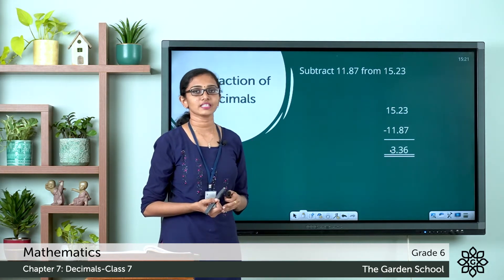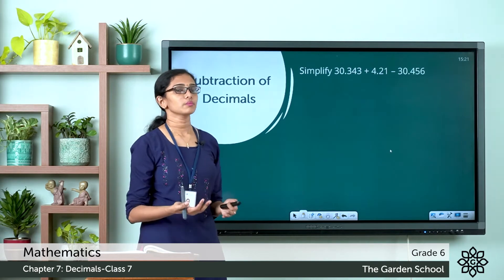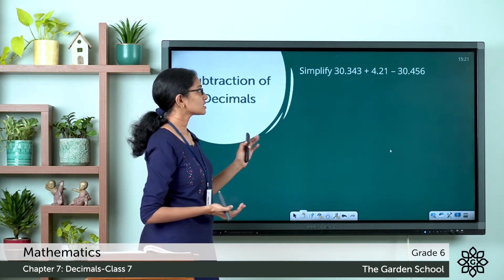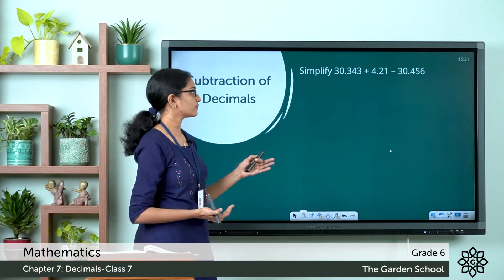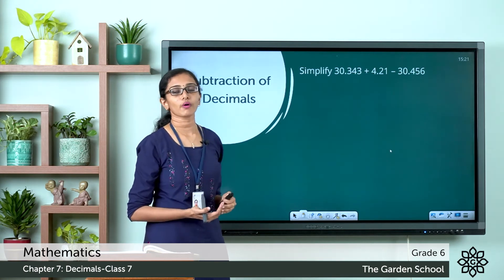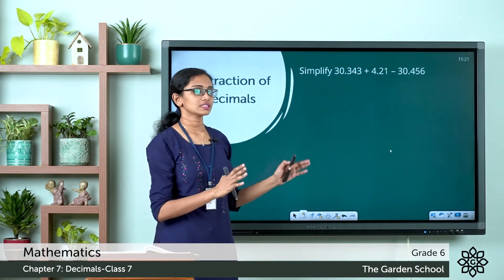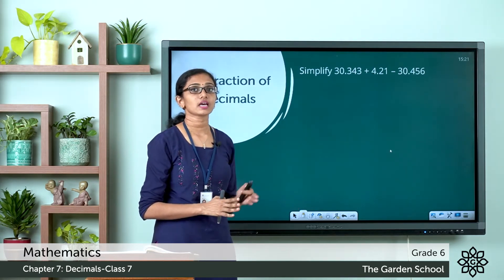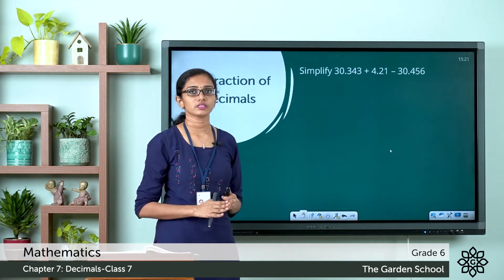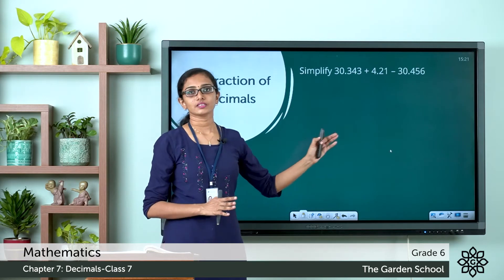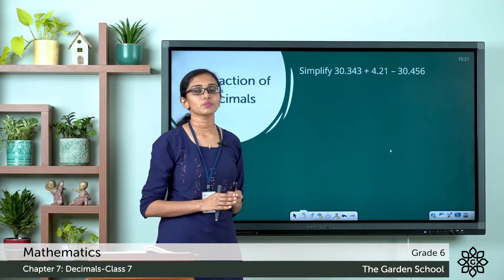I hope this is clear to you. Now we will see one more example. Here the question is to simplify 30.343 plus 4.21 minus 30.456. So the same mathematical statement contains two different operations. There is addition and there is subtraction. Which operation will we do first?